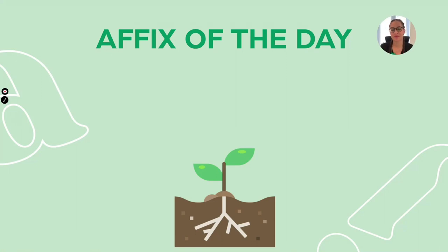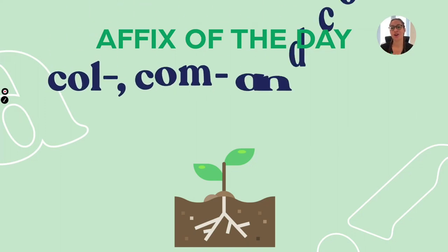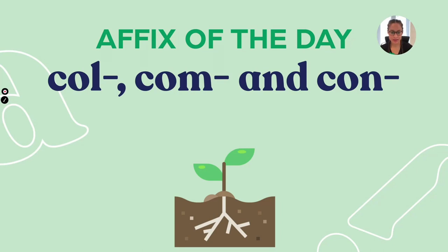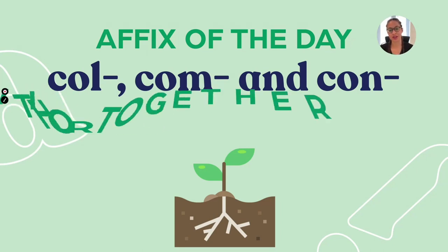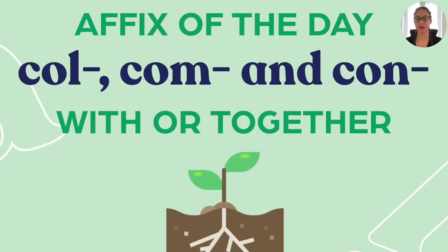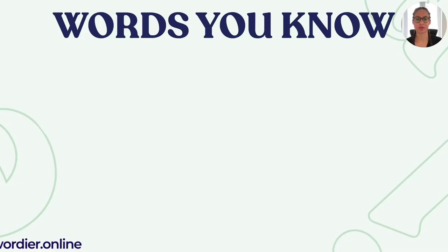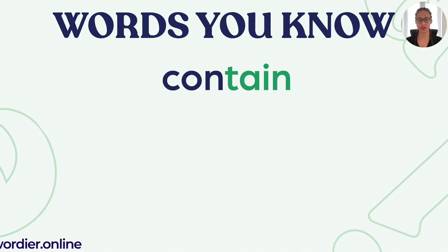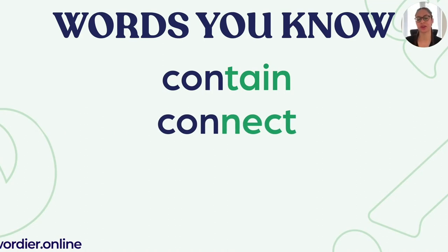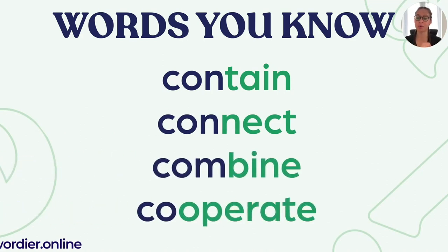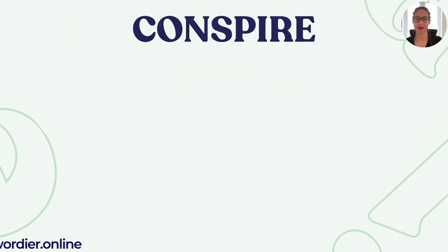Welcome back to our five words in five minutes series. Today's affixes are col, com, and con — they all mean the same thing, which is why they're in the same video: 'with' or 'together.' Let's look at some words you'll already know that have these prefixes: contain, company, connect, combine, cooperate. Co is another version of this prefix that also means 'with' or 'together.' Let's get into our five words.